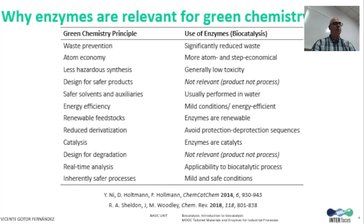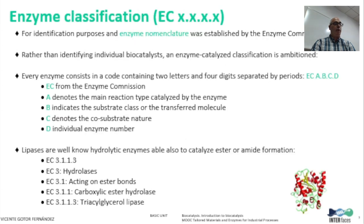Biotransformations are environmentally friendly processes obtained from natural sources, used in catalytic quantities, and work under very mild reaction conditions, usually at room temperature and physiological pH. To adequately group enzyme actions, the Enzyme Commission has elaborated a classification consisting of codes with the letters EC followed by four digits that define the role a biocatalyst is developing in a process: the reaction it catalyzes, the substrate class, the co-substrate nature, and the individual enzyme number. For instance, EC 3.1.1.3 refers to the hydrolase class acting on ester bonds, particularly a carboxylic ester hydrolase with 3-acetylglycerol as the model substrate.